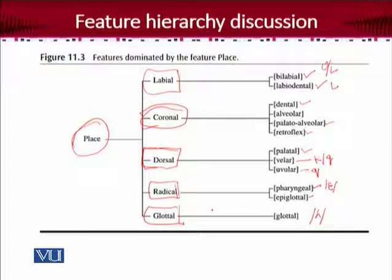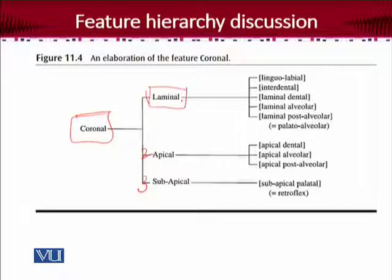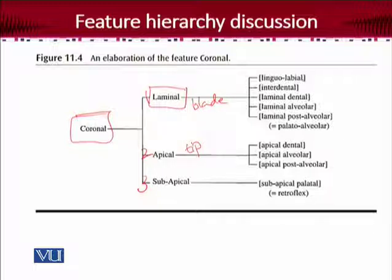We can further divide these places into subparts. The example is that coronal can also be divided into further specification. Coronal as a place of articulation is divided into three subgroups, or subfeatures. One is laminal, where the blade of the tongue is used. So that's the difference between laminal and apical — in apical, the tip of the tongue is used, and in laminal, the blade of the tongue is used.